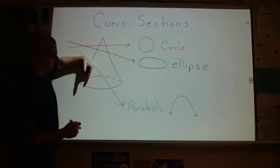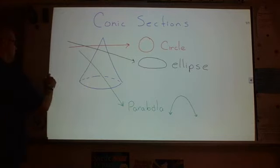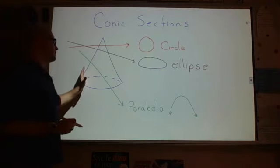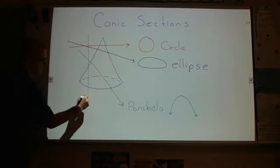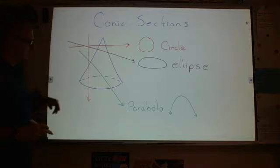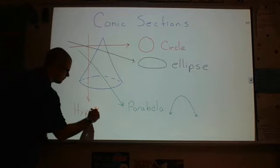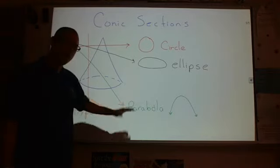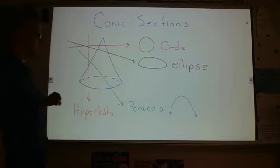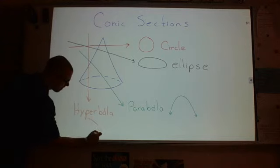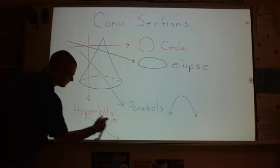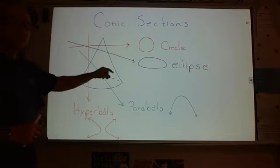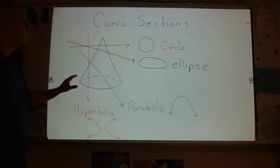And then if we continue even farther cutting that cone with a vertical cut — maximum eccentricity, a cut straight down perpendicular to the base — we get a hyperbola, which looks like two parabolas, one opening up and one opening down, or to the left and right, which we'll talk about when we get to that particular one. So we get four very different shapes from this cone: the circle, the ellipse, the parabola, and the hyperbola.